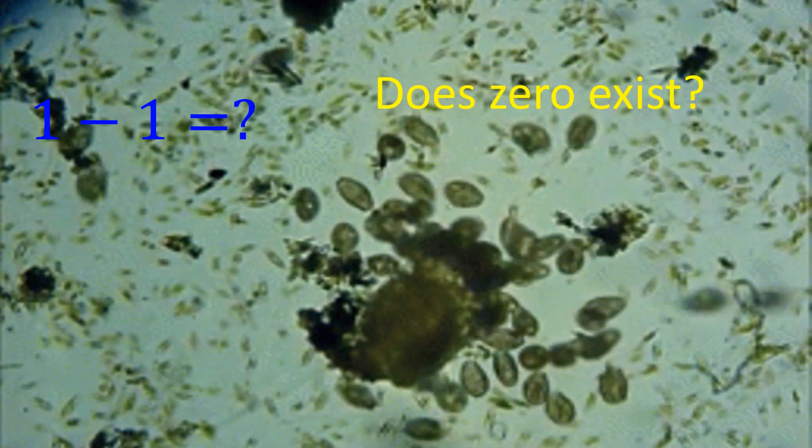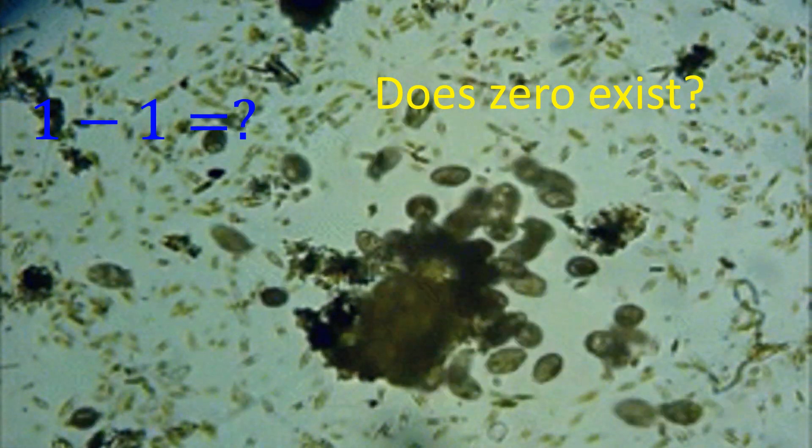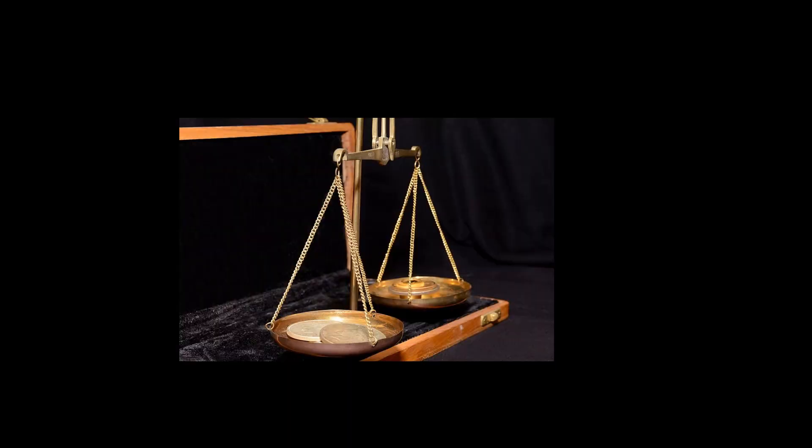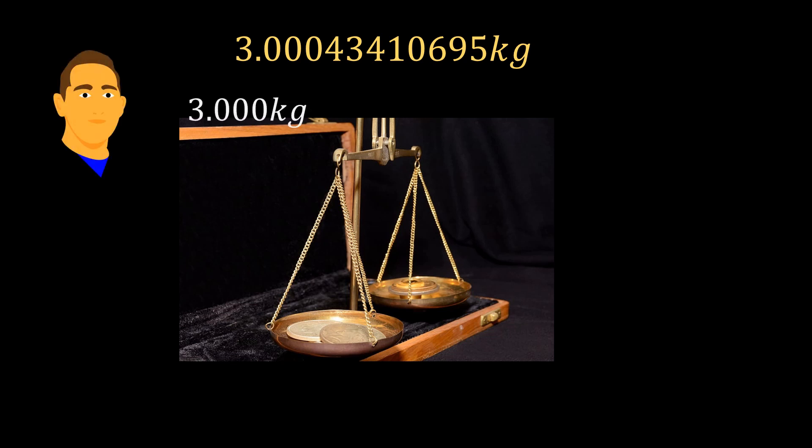Let us look at this numerically. Let's say we have a very sensitive balance that measures the mass of that cookie to be 3.00043410695 kilograms. According to you, this number is the same as 3.000 kilograms. I mean, what is 0.0004 kilograms? You can surely let that one slide, can't you?